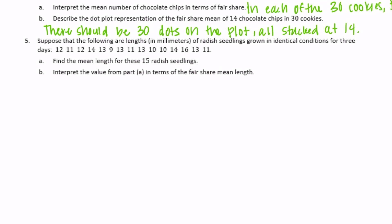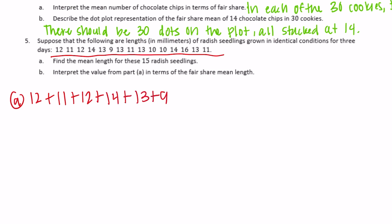Number five: the following lengths in millimeters are lengths of radish seedlings grown in identical conditions for three days. Find the mean of these 15 radish seedlings. I'm going to use the traditional formula rather than the fair share method because it's a lot of drawing and moving things around. So we're going to add all of these together: 12 plus 11 plus 12 plus 14 plus 13 plus 9, and so on for all values.